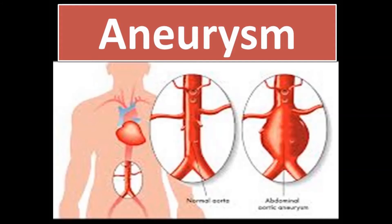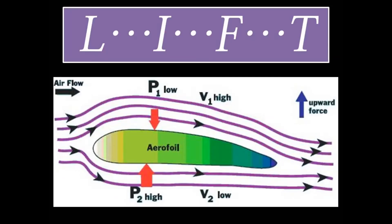Now let's talk about lift. Is there a similarity between garden hose physics, aneurysms, and lift? The velocity of air going over an airfoil — a fixed wing — is high on top, so there's low pressure on top. There's lower velocity on the bottom, so high pressure on the bottom. You get an upward vector greater than the downward vector, and that's called lift.